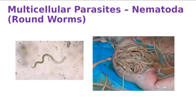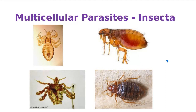We're also going to look at some of the exoparasites. We're going to look at the insects. This is a body louse. This is a crab louse. That's a flea. That's a bed bug. How do we know these are all insects? What do we use to determine if they are insects?